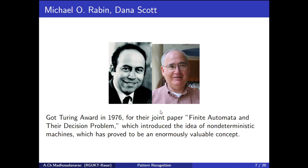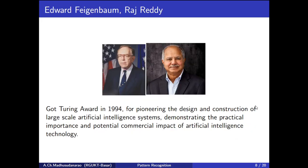In 1976, two people received the Turing Award. In 1994, two people got the Turing Award. One of them is an Indian — Professor Raj Reddy. He is a founding member of our institute, RJUKT Basar, and sister institutes RJUKT and others. He is the founding member and the first chancellor of all three universities. These two people got the Turing Award in 1994 for pioneering the design and construction of large-scale artificial intelligence systems.